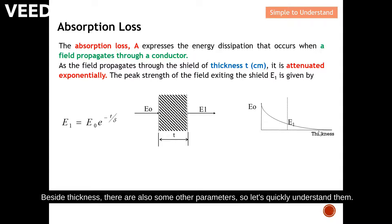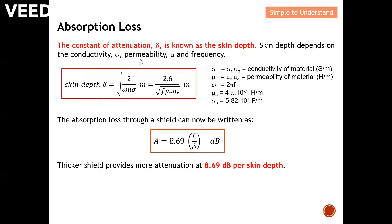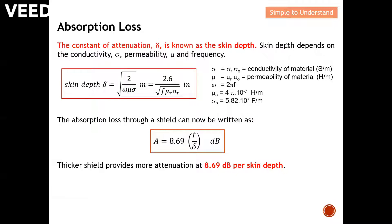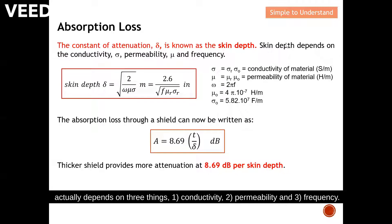Besides thickness, there are also other parameters. The constant of attenuation is also known as skin depth. This skin depth depends on three things: number one, conductivity; number two, permeability; and also the frequency.